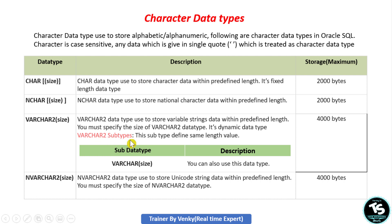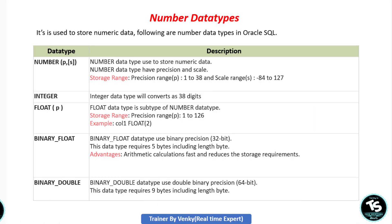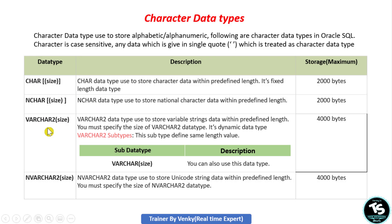There is also a VARCHAR subtype data type. We can use this — it is also 4000 bytes — but once declared as VARCHAR, Oracle server automatically converts it to VARCHAR2. Next, NVARCHAR2: this data type is the same as VARCHAR2, but if you want to insert data in a language other than English, you must use NVARCHAR2. Most of the time we use VARCHAR2; CHAR is used only in rare cases.